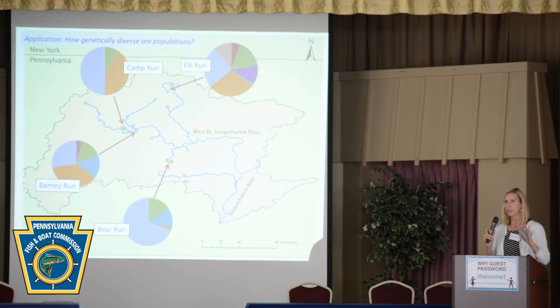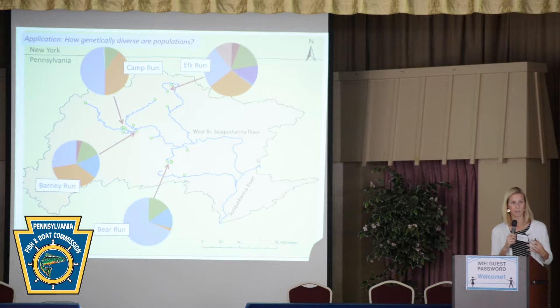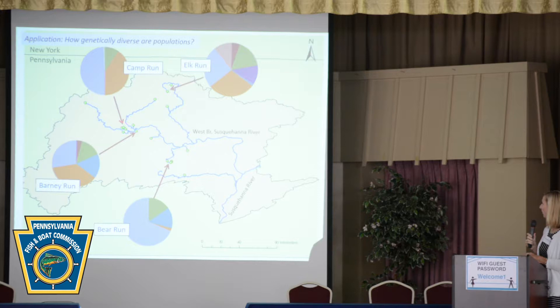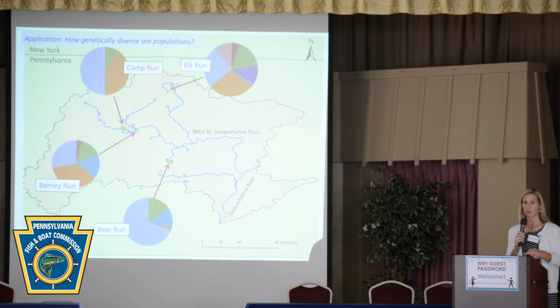That's more of a community assessment approach. These next applications are individual-based methods — we're looking at individuals representing a population and then comparing those populations across the landscape. For example, here's the west branch of the Susquehanna, and we've looked at green dots representing brook trout populations throughout Pennsylvania. We've looked at quite a large number now, many more than what's shown here. I've pulled out four different populations so we can compare their estimates of diversity: Camp Run, Elk Run, Bear Run, and Barney Run.